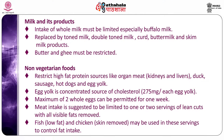Moving on to milk and its products: intake of whole milk must be limited; especially buffalo milk should be used after removing the fat layer after cooling. This can be replaced by toned milk, double toned milk, buttermilk, and skimmed milk products. Butter and ghee must be restricted as they contain high levels of cholesterol and saturated fats. For non-vegetarian foods, restrict high-fat protein sources like organ meat, duck, sausage, hot dog, and egg yolk. Egg yolk is a concentrated source of cholesterol containing 275 milligrams; a maximum of 2 whole eggs per week is permitted. Meat intake is suggested to be limited to 1–2 servings of lean cuts with all visible fats removed; fish with low fat and skinless chicken may be used to control fat intake.